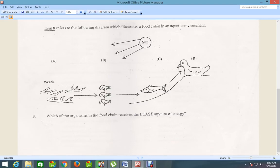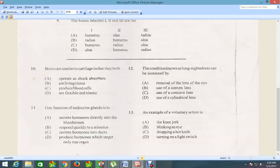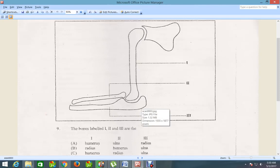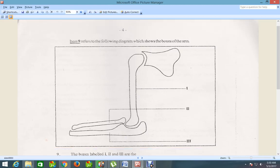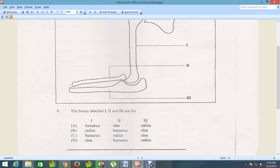Let's move to question 9. Item 9 refers to the following diagram which shows the bones of the arm. And it is now saying the bones labeled I, II, and III are. So as for the first one, this bone, it is known as the humerus. So let's see which one has the humerus.